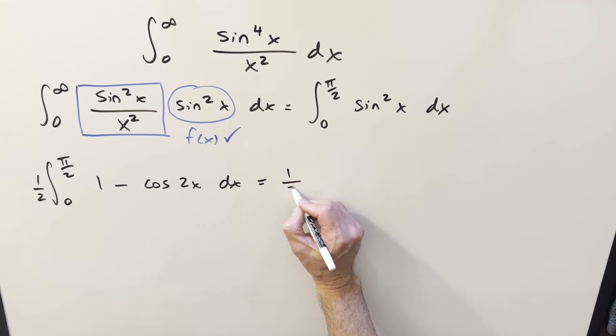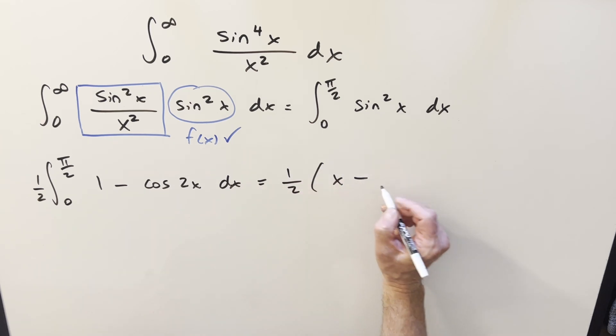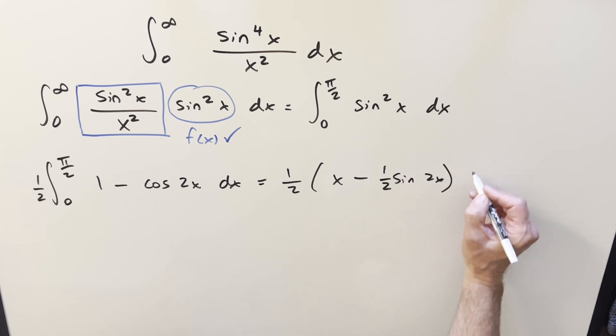Go ahead and integrate. We've got one half in front. This is going to be x minus sine 2x. Then we just have to have a half come out here, and just evaluate from zero to pi over two.